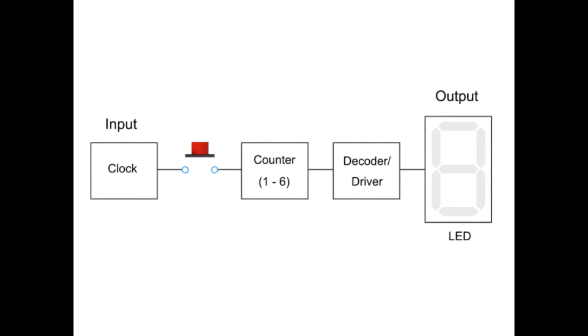Digital systems can be created to perform many different tasks. A simple digital system is diagrammed here. This block diagram shows a series of steps that lead to an effective random display of a digital number.